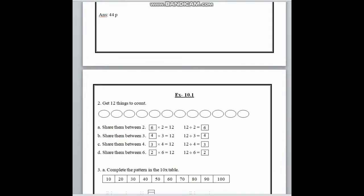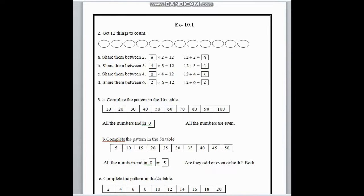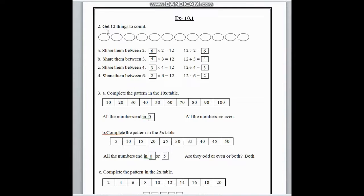Now here is 10.1. In number 2, get 12 things to count — here are 12 circles. We have to share them between 2. The equation is: blank place into 2 is equal to 12. If we share 12 things between 2, we divide 12 by 2 and we get 6. So we have to write here 6 into 2, and we know that 6 twos are 12.